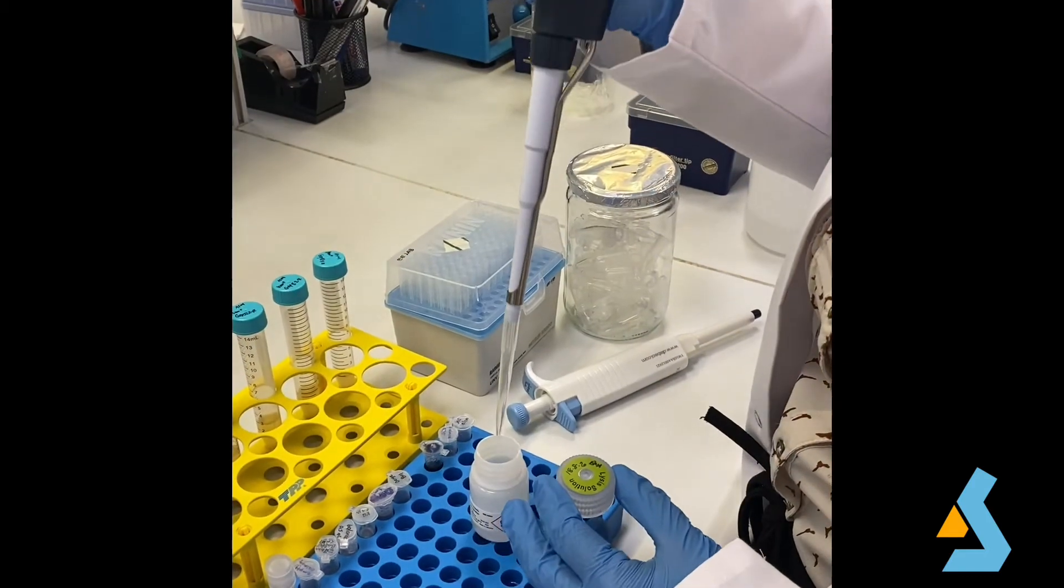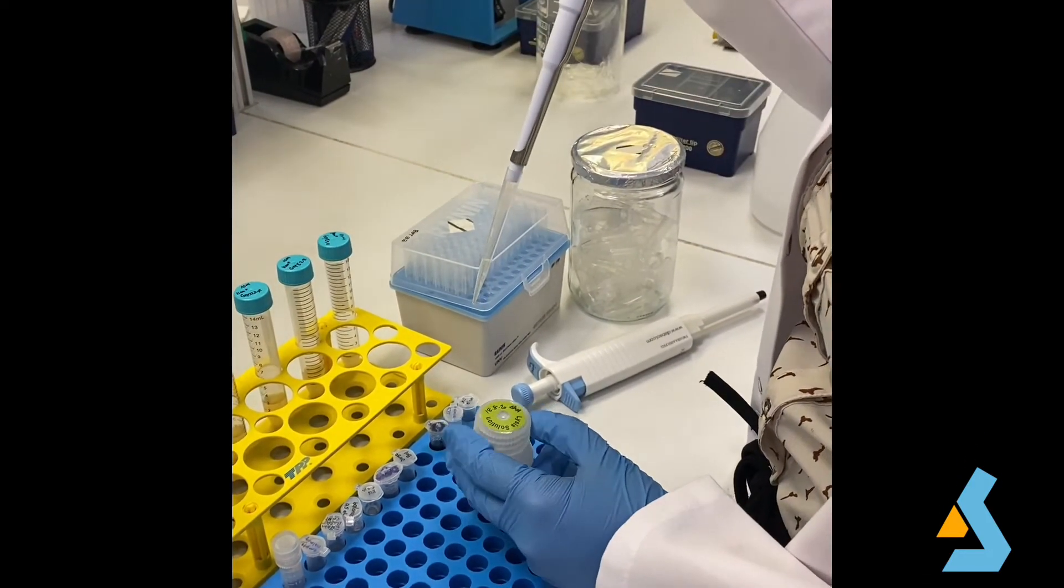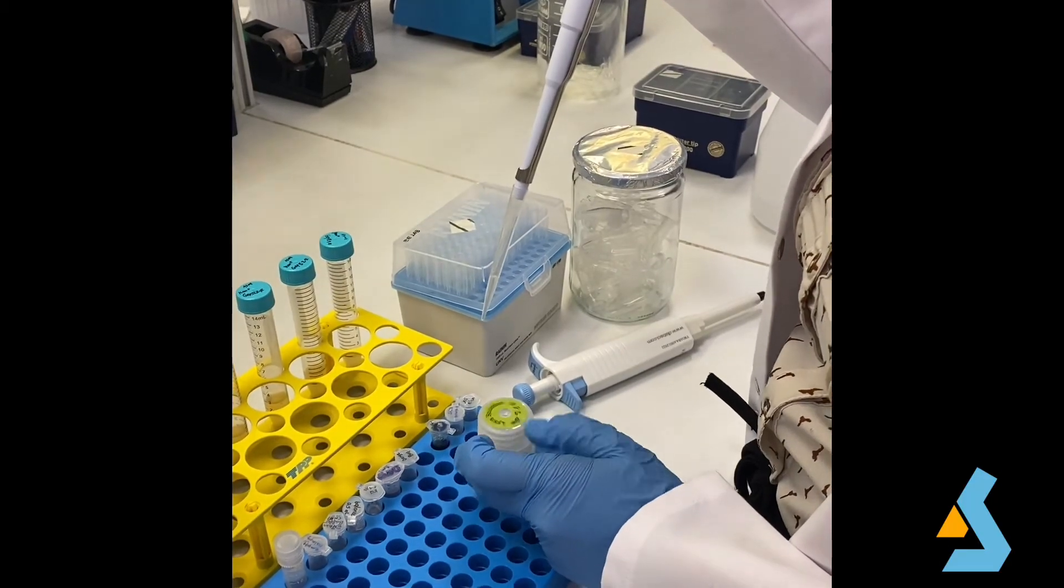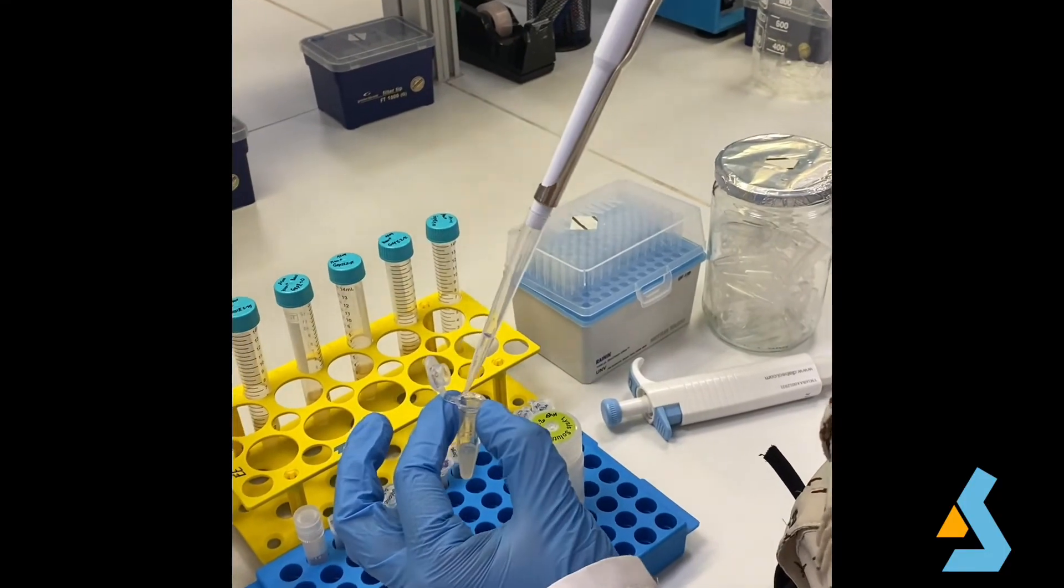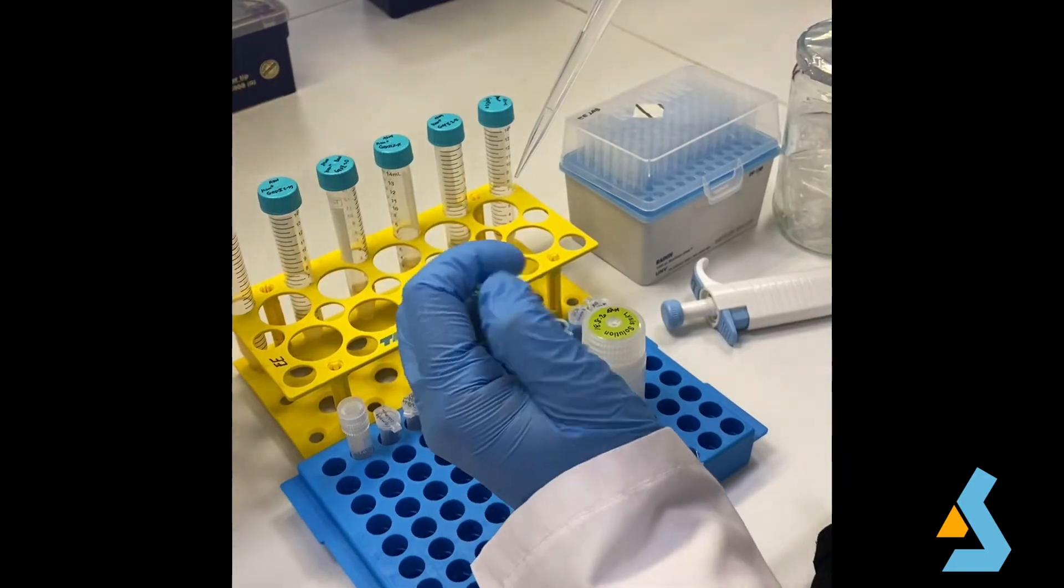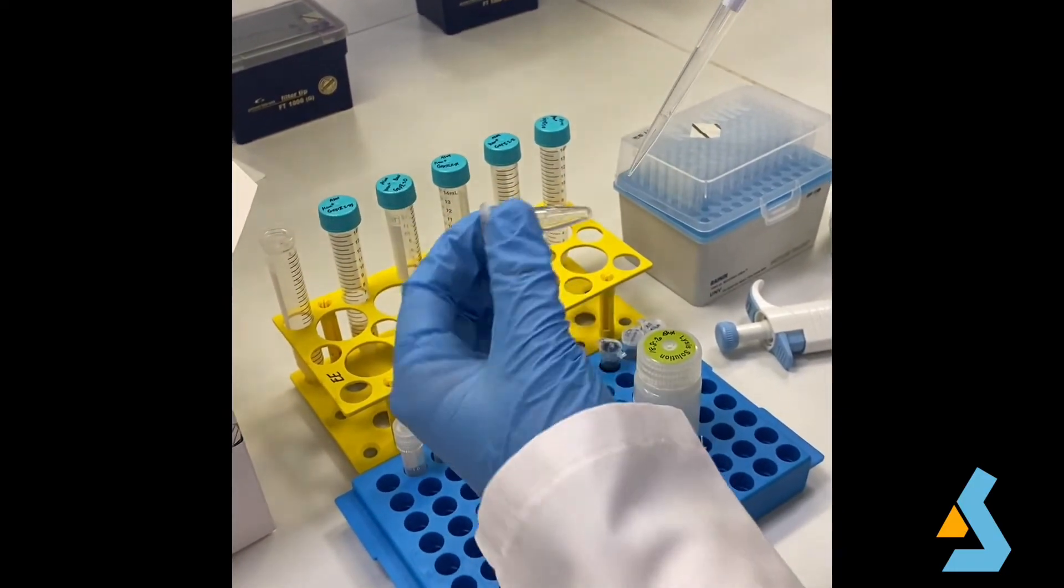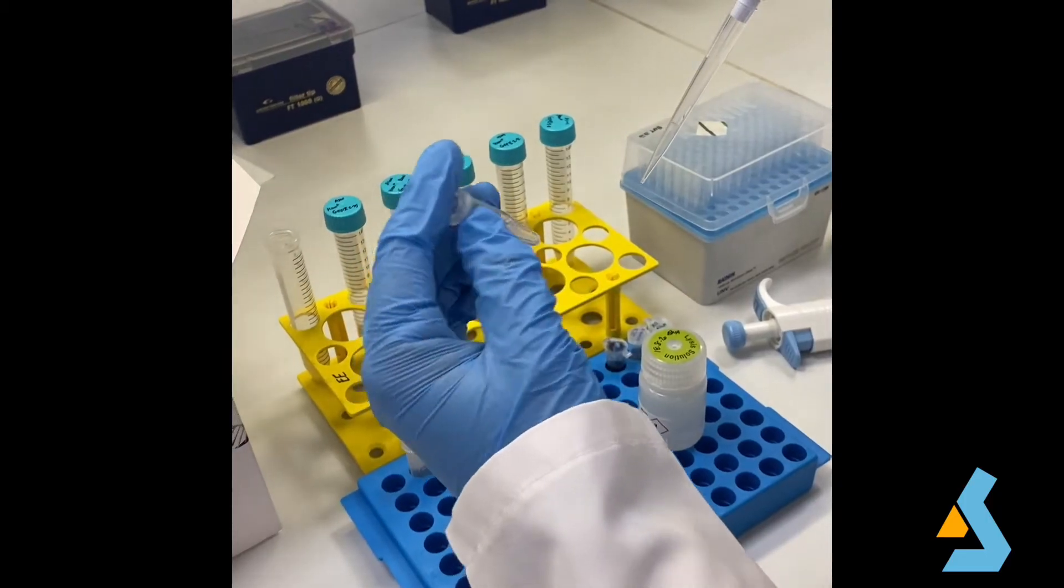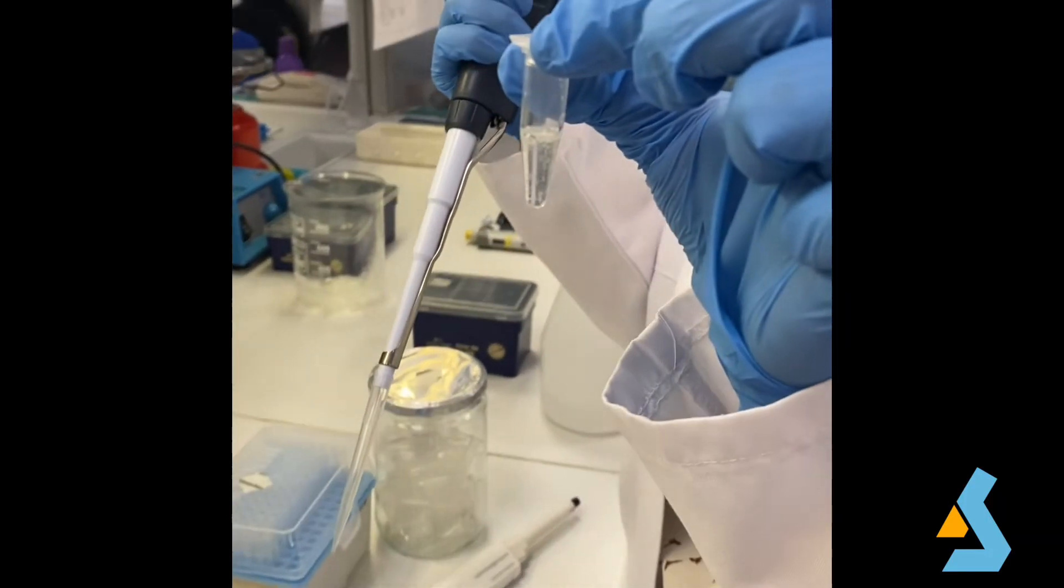Then cells are lysed in 250 microliters of lysis buffer. Lysis buffer contains a detergent such as SDS to break down the cellular membrane. In this step, DNA is released into the cell suspension. For this to happen, we need to mix thoroughly by inverting the tube four to six times until the solution becomes viscous and slightly clear. And we should keep the tube at room temperature for three minutes.